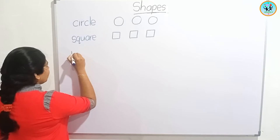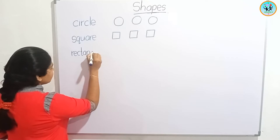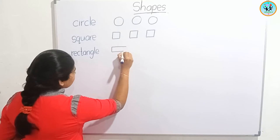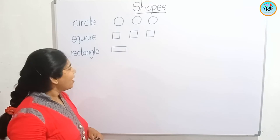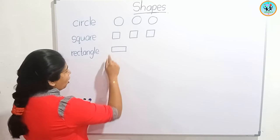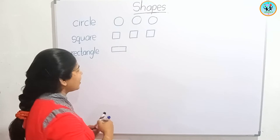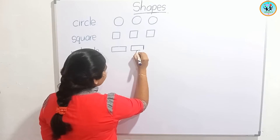Let's draw a rectangle. Look at this — how many sides are here? One, two, three, four. Four sides are here. Are they equal? No. But opposite sides are equal — this side equals this side, and this side equals this side.